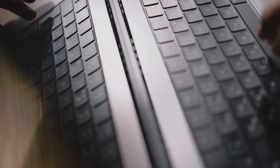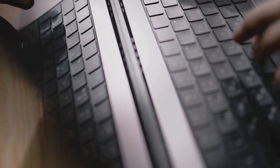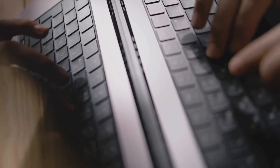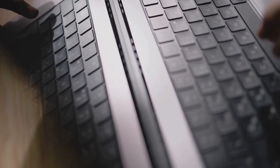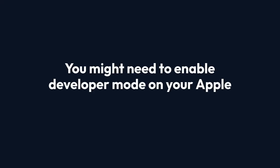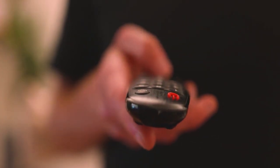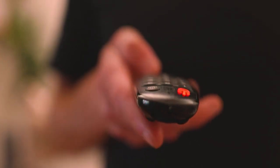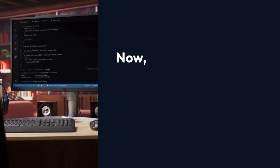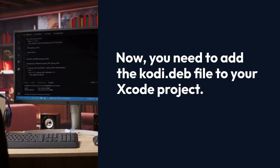Once Xcode is installed, connect your Apple TV to your Mac using the USB-C cable. Open Xcode and create a new project. Select Single View App under the iOS tab. Give your project a name — it doesn't really matter what you name it. The important thing is to select your Apple TV as the target device. You might need to enable Developer Mode on your Apple TV. Go to Settings > Remotes and Devices > USB Accessories and make sure USB Accessories are allowed. Now, you need to add the Kodi.deb file to your Xcode project.